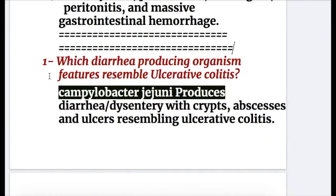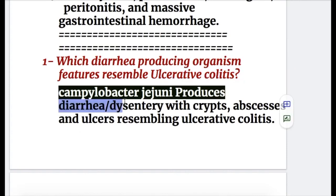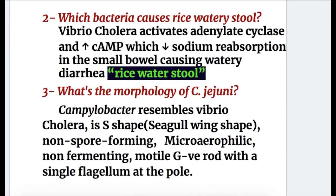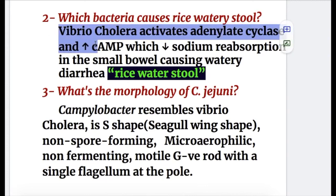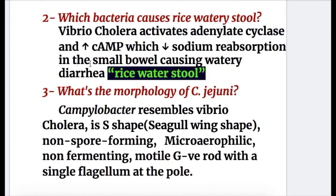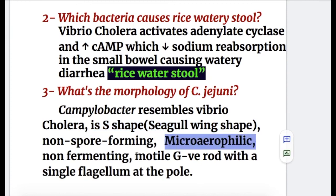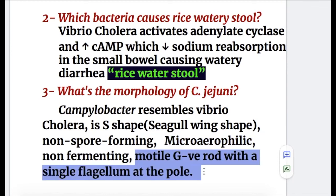Now, answers to the questions. Question one: which diarrhea-producing organism's features resemble ulcerative colitis? Campylobacter jejuni produces diarrhea and dysentery with crypts and abscesses that resemble ulcerative colitis. Question two: which bacteria causes rice water stools? Vibrio cholerae — it activates adenylate cyclase, increases cyclic AMP, decreases sodium reabsorption in the small bowel, producing watery rice water stools. Question three: what is the morphology of Campylobacter jejuni? It resembles Vibrio cholerae — S-shaped, seagull wing-shaped, non-spore-forming, microaerophilic, non-fermenting, motile, gram-negative rod with a single flagellum at the pole.